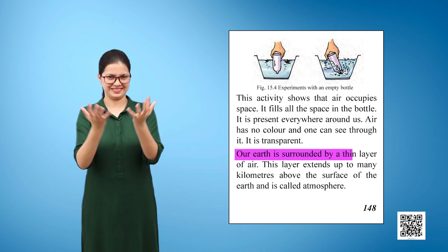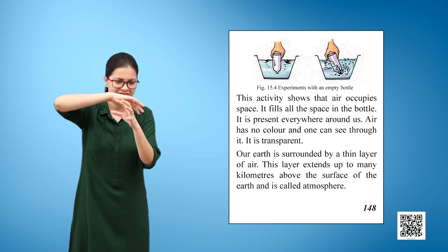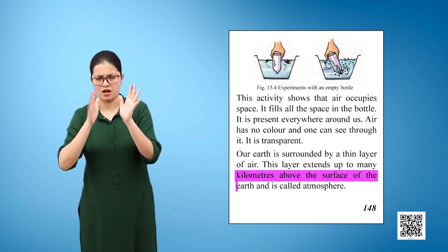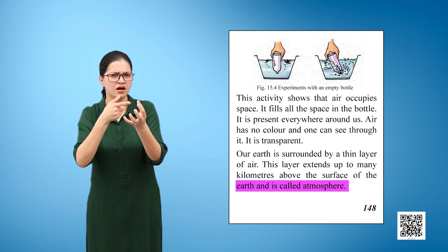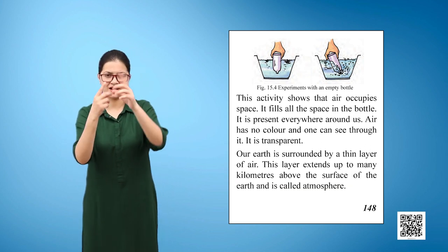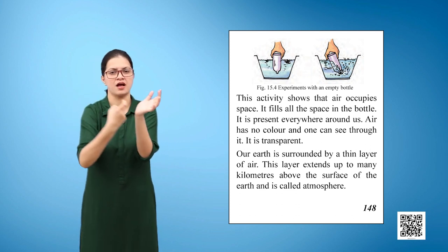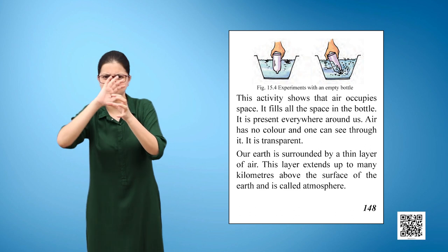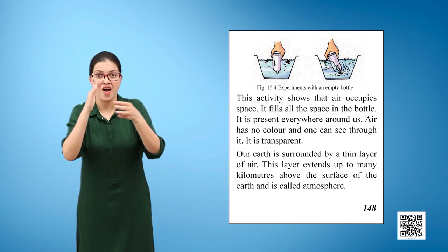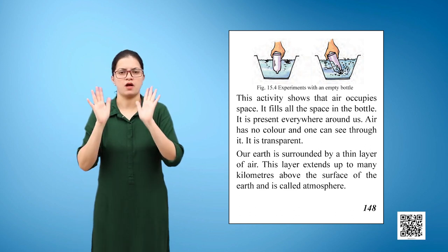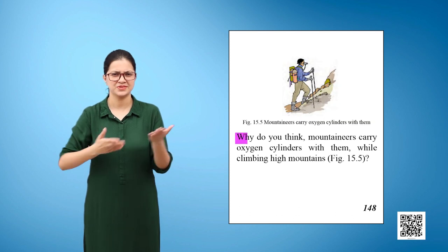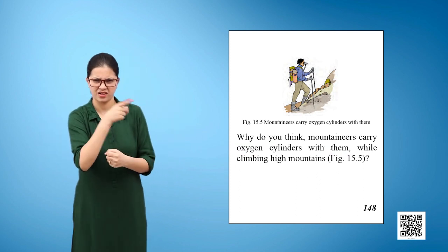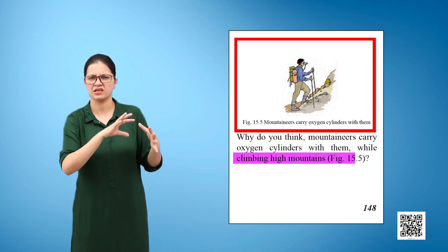Our earth is surrounded by a thin layer of air. This layer extends up to many kilometers above the surface of the earth and is called atmosphere. Why do you think mountaineers carry oxygen cylinders with them while climbing high mountains? Figure 15.5.